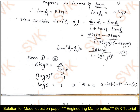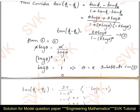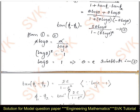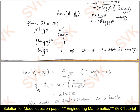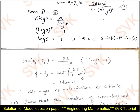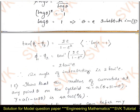Therefore, log θ = 1, and since we have base e, θ = e. Substituting this in equation 3, we get tan(φ₁ − φ₂) = 2e/(1 − e²), since log e to base e equals 1. Therefore, φ₁ − φ₂ = tan⁻¹(2e/(1 − e²)). Using the standard formula, this equals 2·tan⁻¹(e). So the angle between the two curves is 2·tan⁻¹(e).